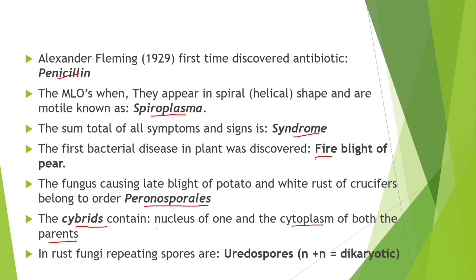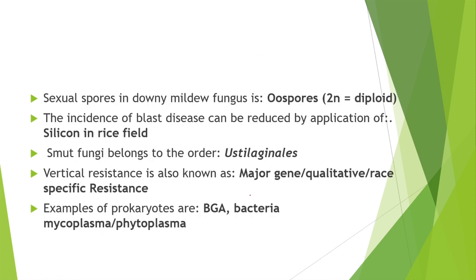In rust fungi, repeating spores are called uredospores. The sexual spores in downy mildew fungus are oospores. The incidence of blast disease can be reduced by application of silicon in rice fields. Rice blast is also called the rich man's disease.